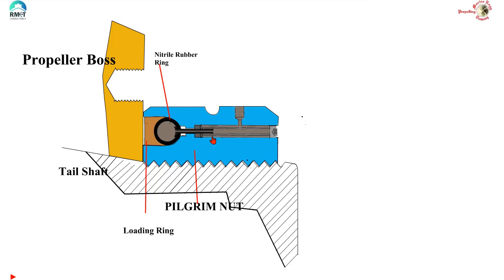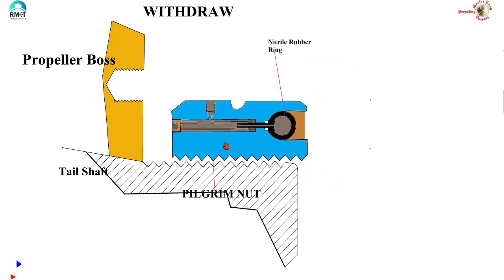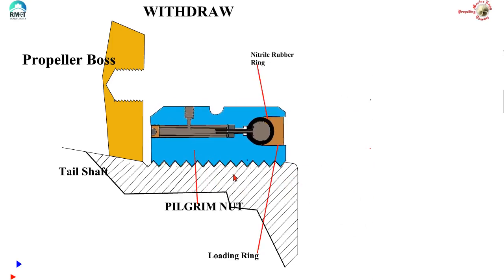The first step is to remove the Pilgrim Nut from place and then reverse it and fit it appropriately. When I say reverse, the loading ring should face away from the propeller boss.